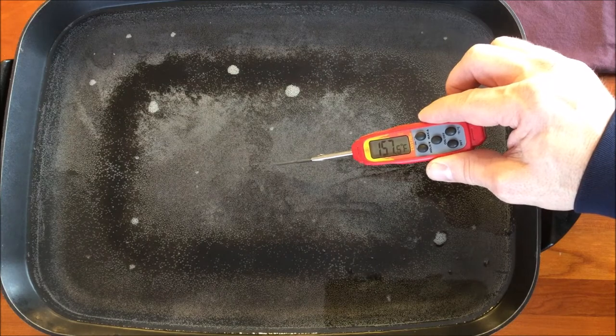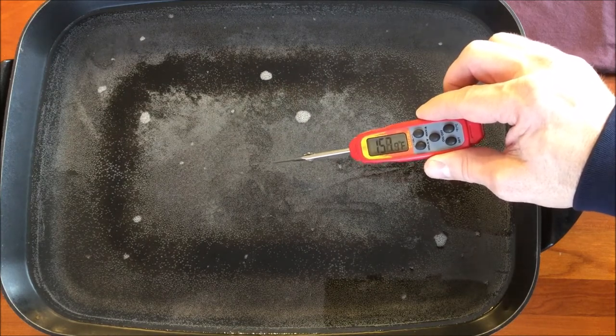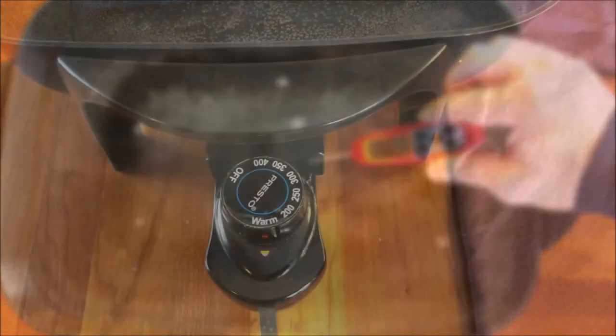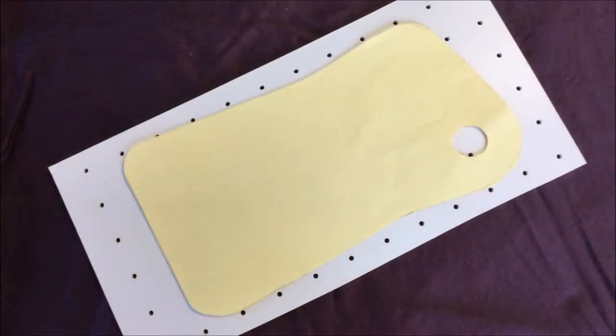You want your water to be around 155 to 165 degrees Fahrenheit. On this electric fry pan, that means it's right about the A of the word warm.